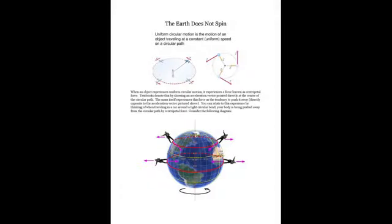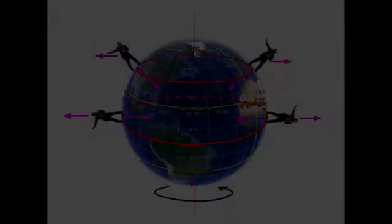Now, let's read David's summary on the topic. The Earth does not spin. Uniform circular motion is the motion of an object traveling at a constant, uniform speed on a circular path. When an object experiences uniform circular motion, it experiences a force known as centripetal force. Textbooks denote this by showing an acceleration vector pointed directly at the center of the circular path. The mass itself experiences this force as the tendency to push it away directly opposite to the acceleration vector pictured above. You can relate to this experience by thinking of when traveling in a car around a tight circular bend. Your body is being pushed away from the circular path by centripetal force. Consider the following diagram.